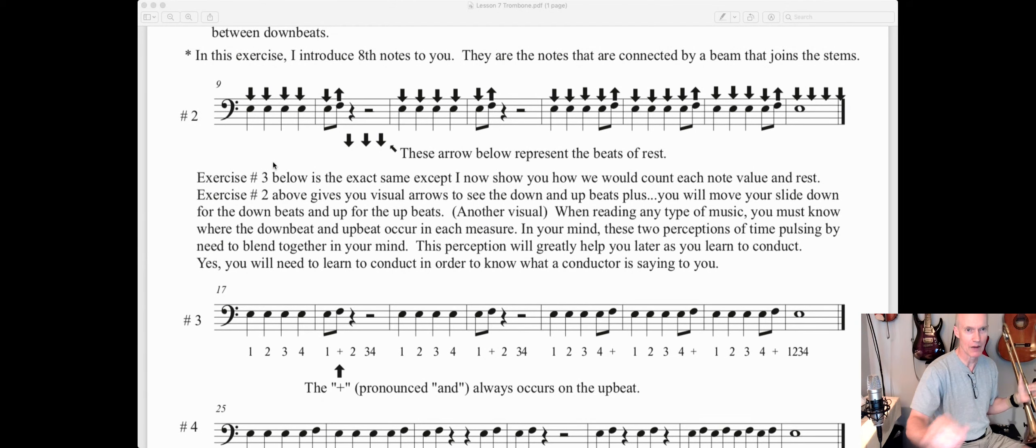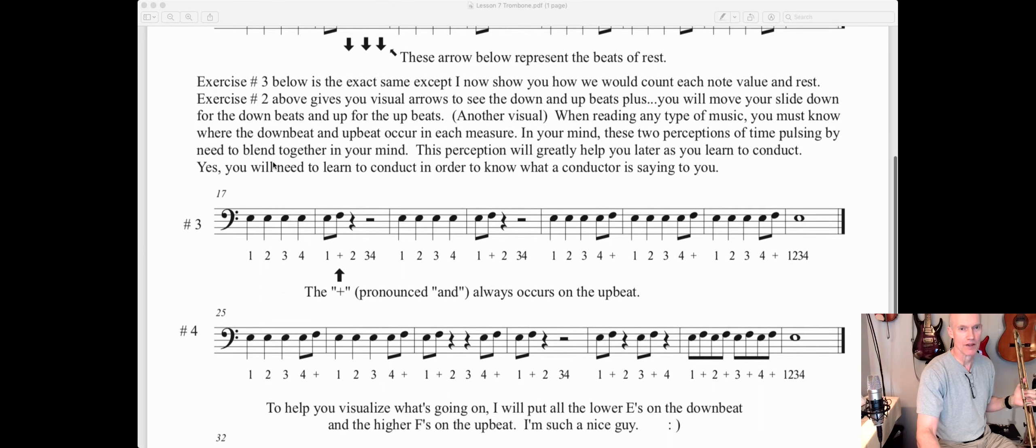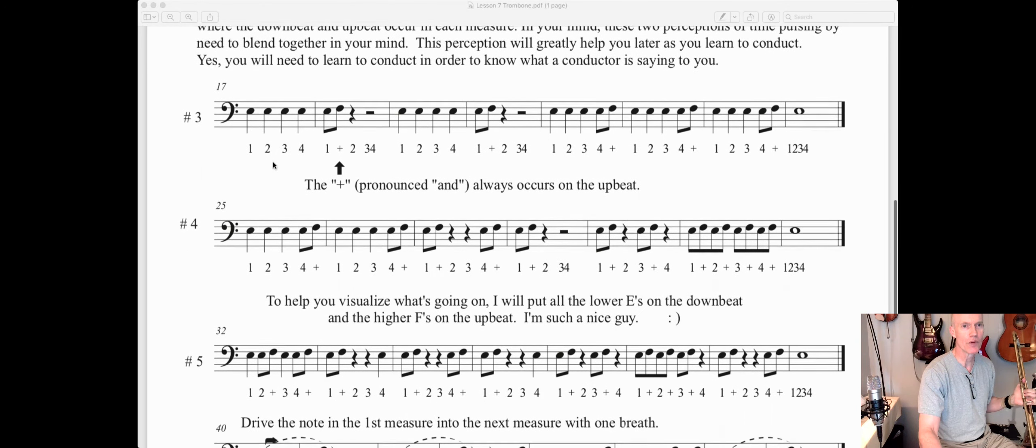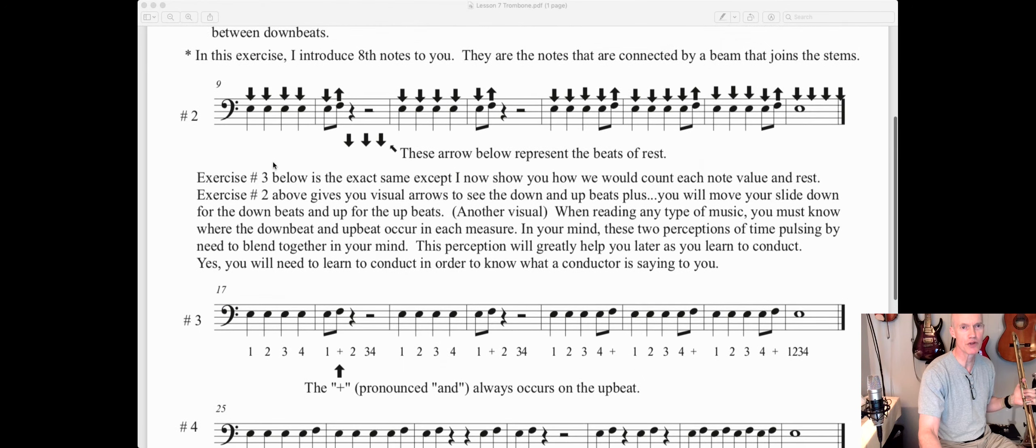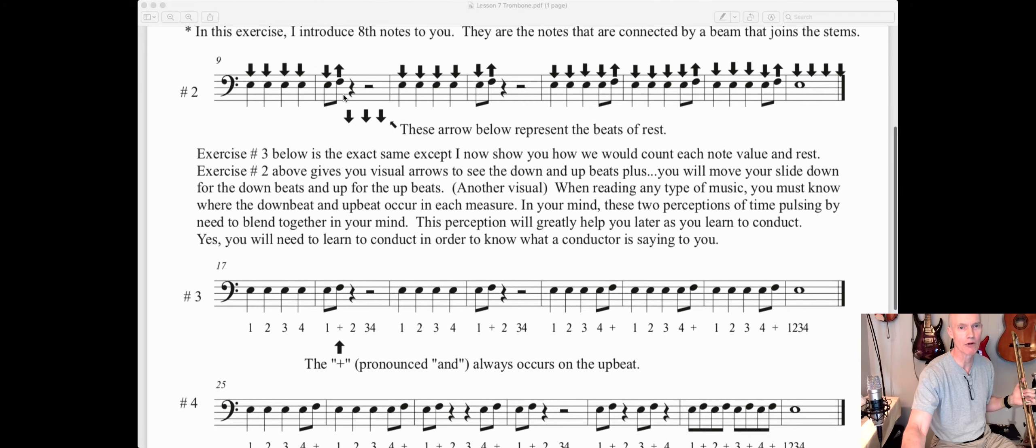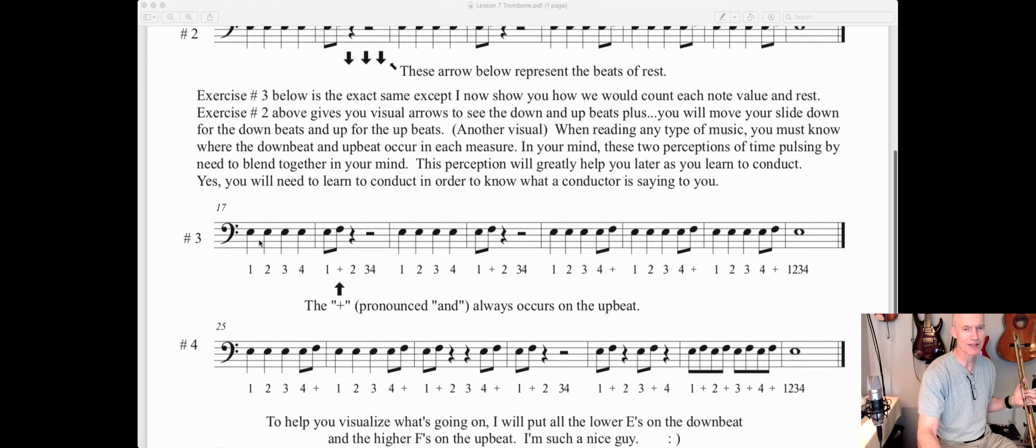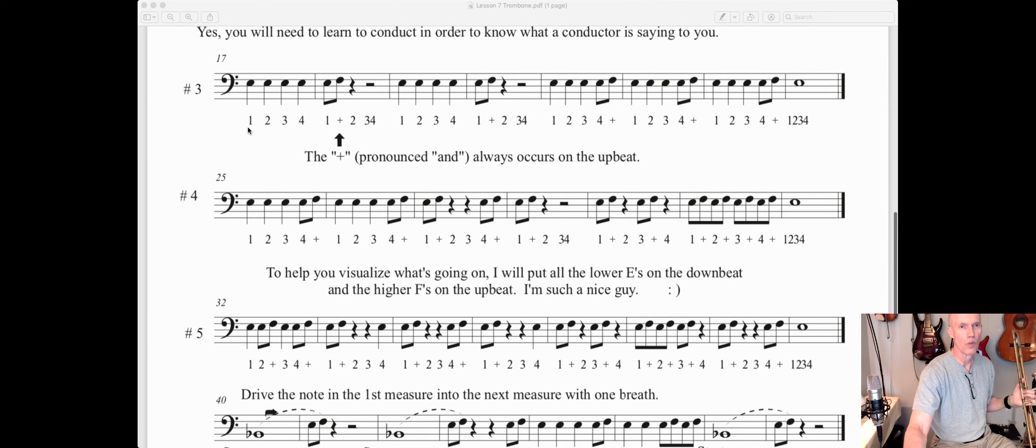All right, that was number two. Now the same thing down here in number three, except instead of showing you these little downbeats and upbeat arrows, I show you how to count it. So this is 'one, two, three, four, one and two, three, four.' I think you get the idea because it's pretty much the same thing.